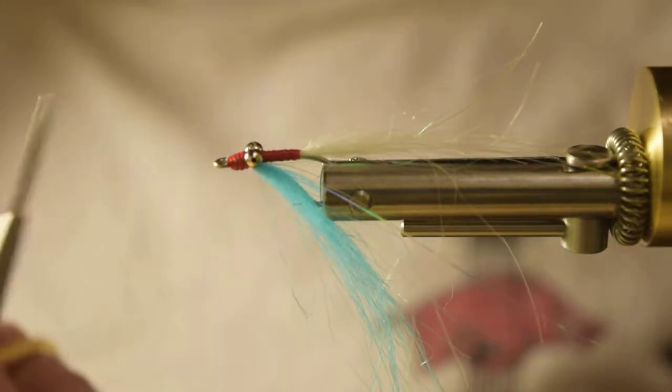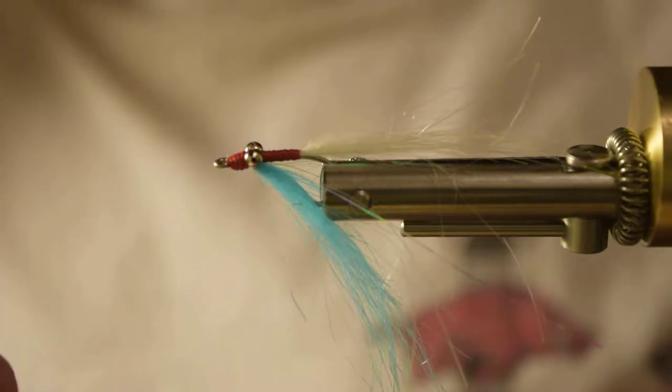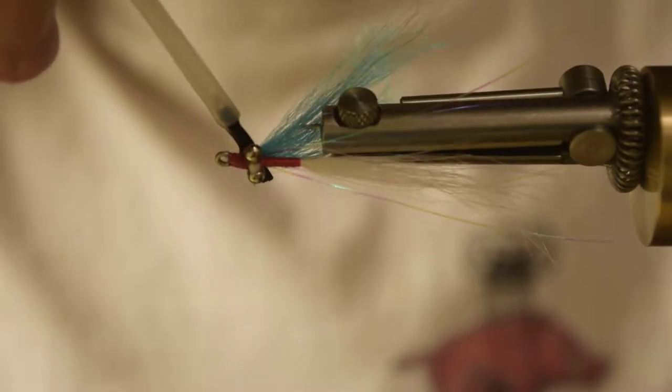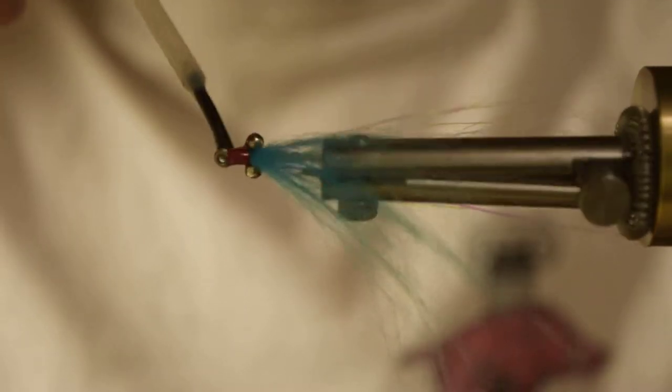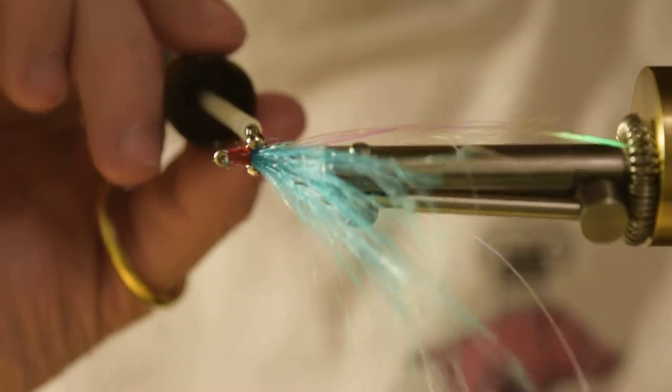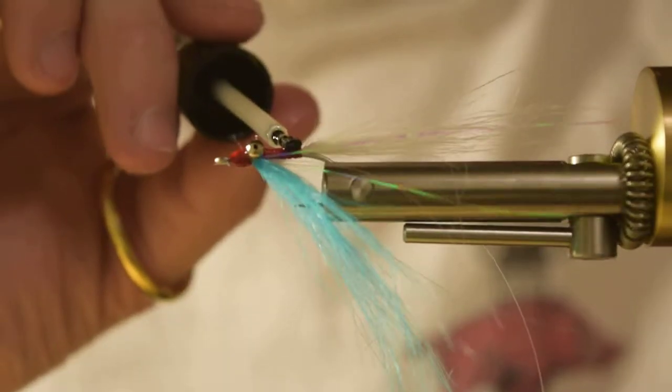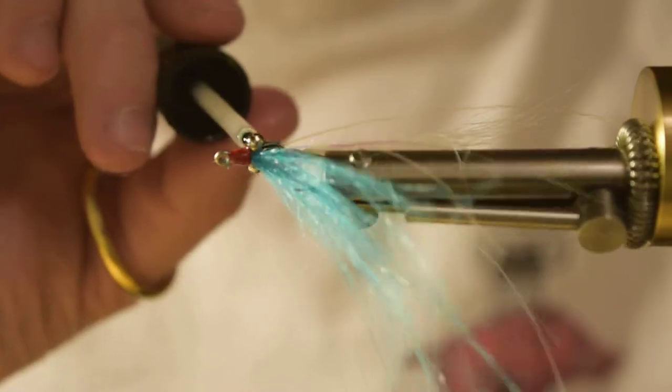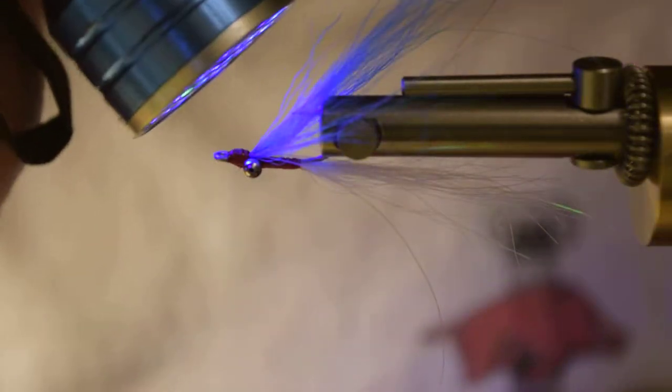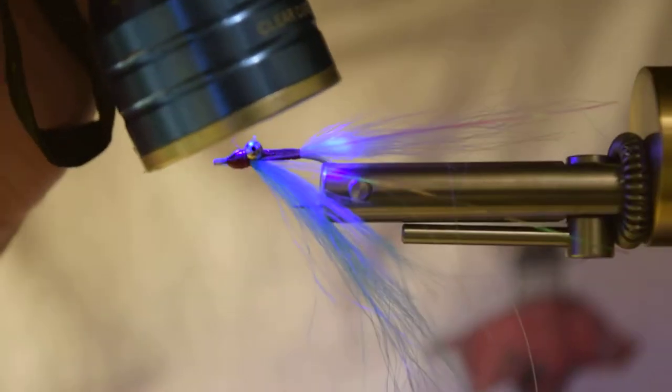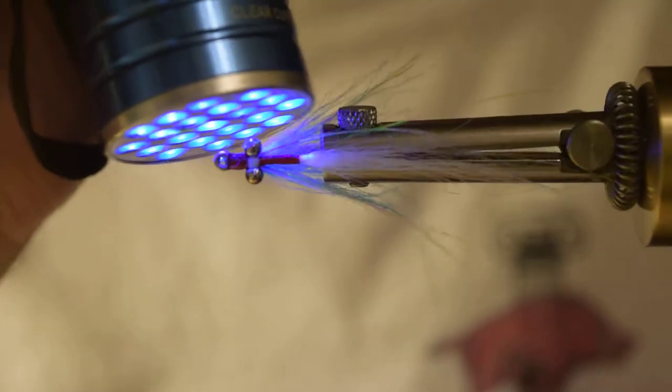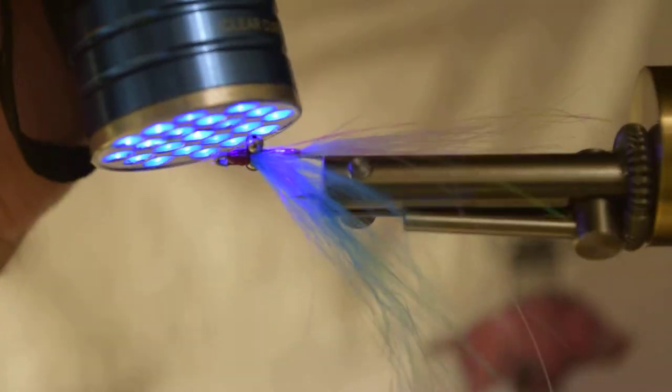I come in with some clear Cure Goo Hydro. And all the thread wraps I'm going to cover up with this stuff. And this will make it almost bombproof. It also gives it a nice shine too, which looks nice. I don't know if the fish can tell. Hit that with my UV light. Just like that. Just a couple seconds.